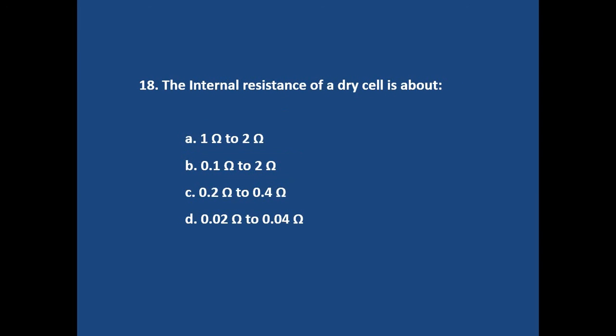Question number 18. The internal resistance of a dry cell is about? Answer is option C. 0.2 ohm to 0.4 ohm.